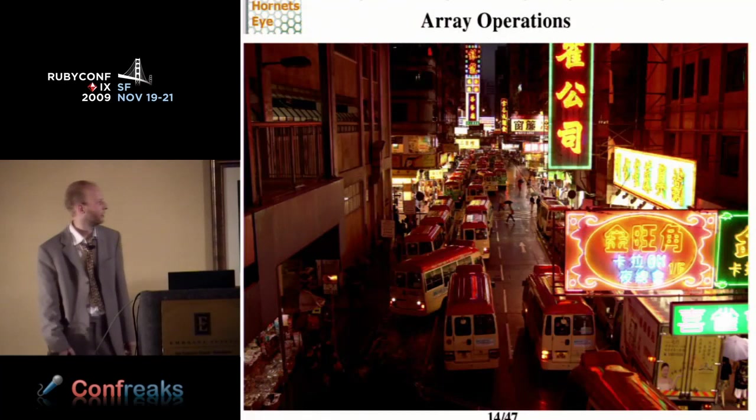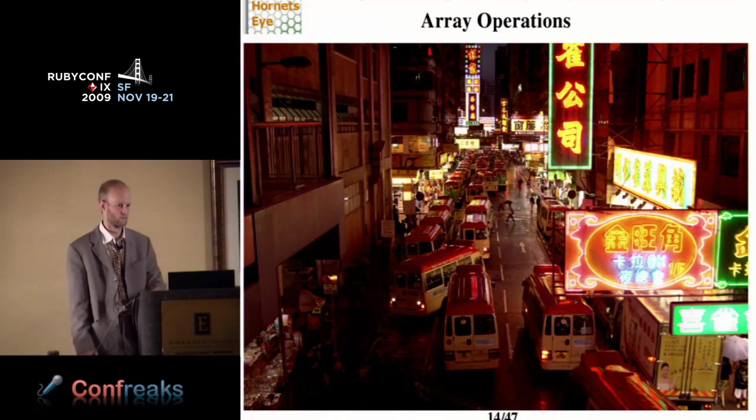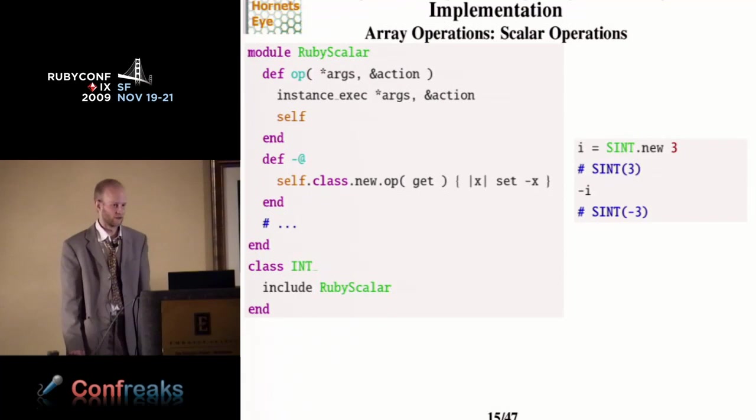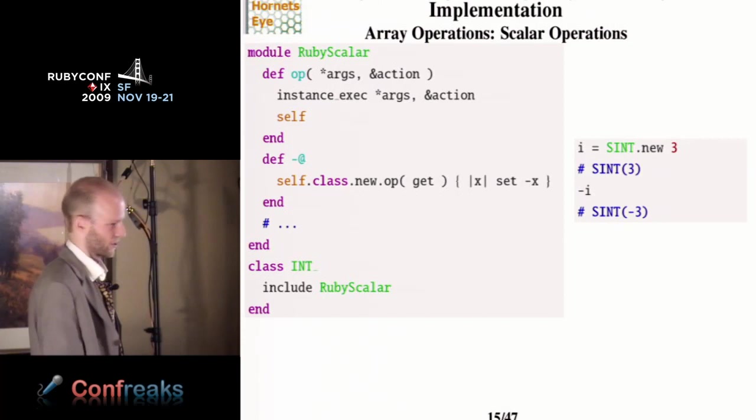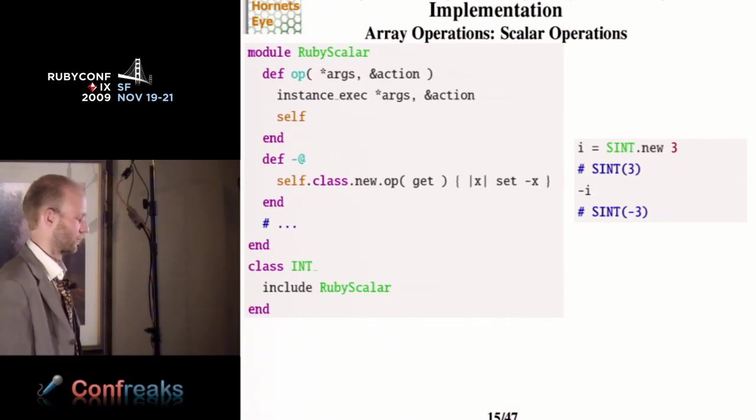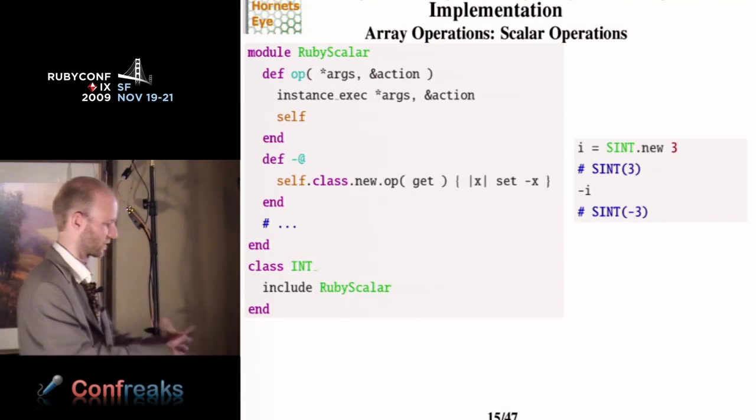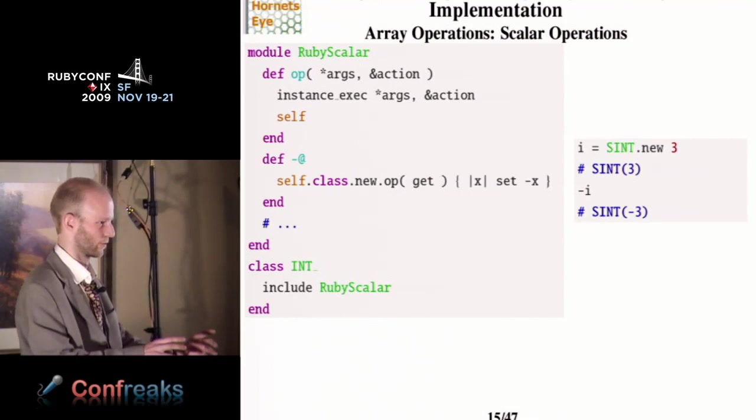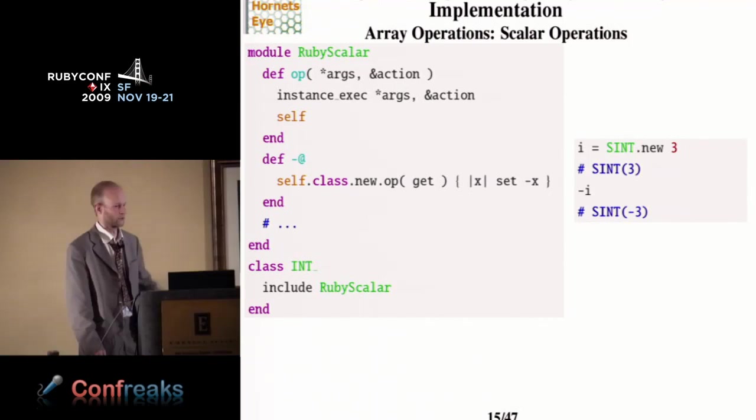So now we have arrays, and the next thing is to define operations on them. I will show you how I implement unary and binary operations. Of course, there are more array operations than this. So we start with scalars, and I just define a method called op, and the method passes its arguments to instance exec. It just calls instance exec, nothing more. And then you can already use this to define a negate operator. The negate operator just creates a new object of this class, and then it calls op with the Ruby value of this native element as a parameter. And the operation you execute with instance exec just does set minus x, so set to the negative value, and that's all. And on the right side, you can see an example where it works as expected. You create a short integer with value 3, and minus x will give you a short integer with value minus 3.